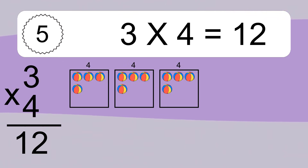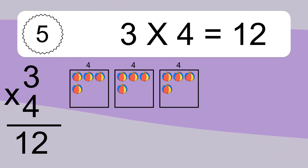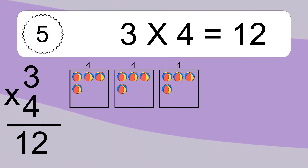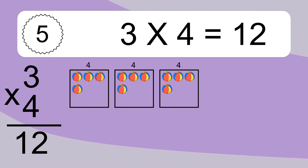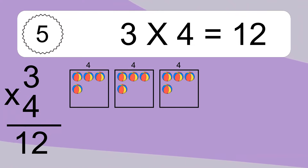We have 3 boxes, and each box has 4 colorful balls inside. If you count all the balls in all the boxes together, you will have 3 times 4 balls. This equals 12 balls.